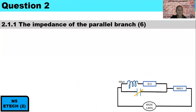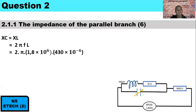In question 2.1.1 we need to calculate the impedance of the parallel branch. Because the circuit is at resonance, the impedance across the parallel branch equals L over CR, so we first need to determine the value of the capacitor. Since XC equals XL at resonance, we calculate XL as 2πfL: 2π times 1.8×10⁶ times 430×10⁻⁶.